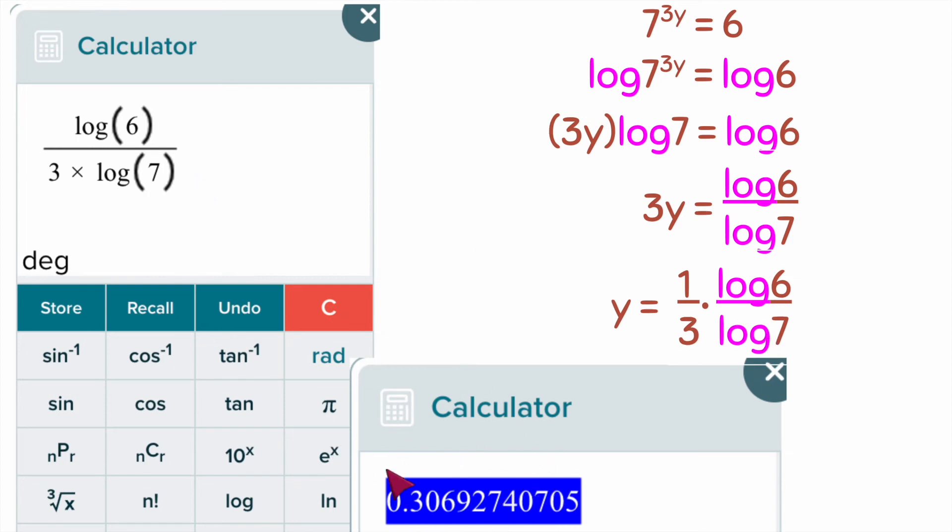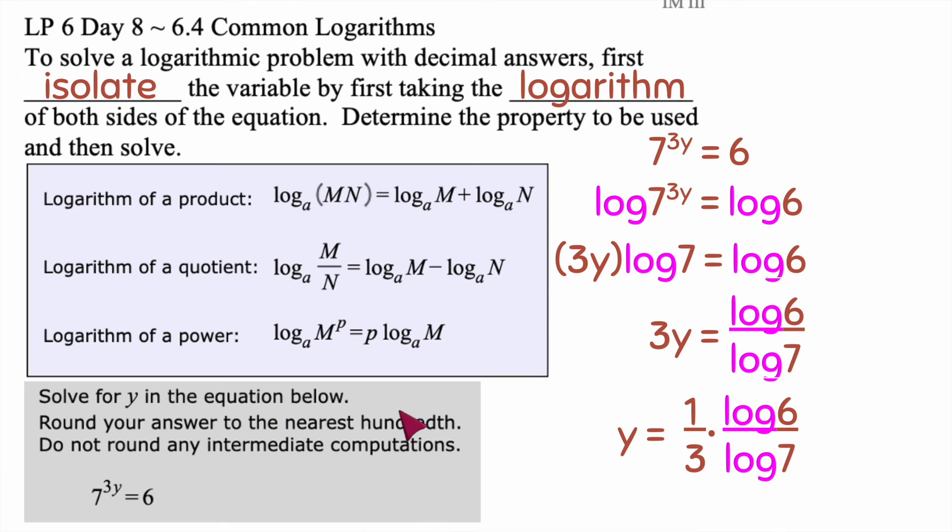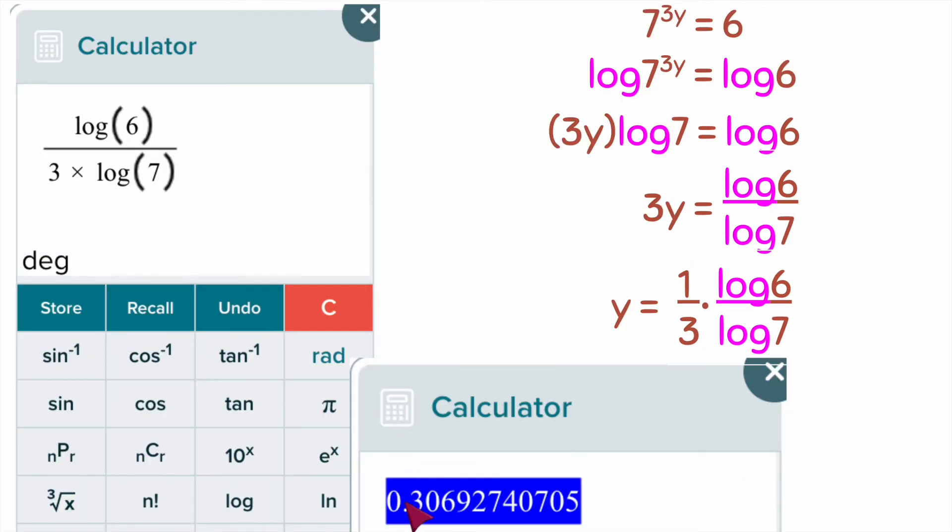When I hit equals, this is what will pop up here. Make sure it said we're going to the nearest hundredth this time. On a previous video it said thousandth, so they do change their minds on that one a little bit.